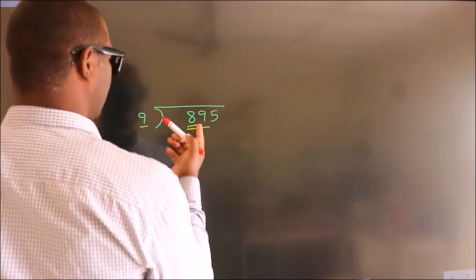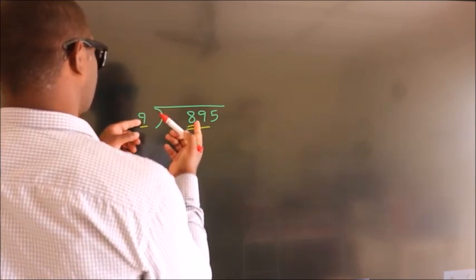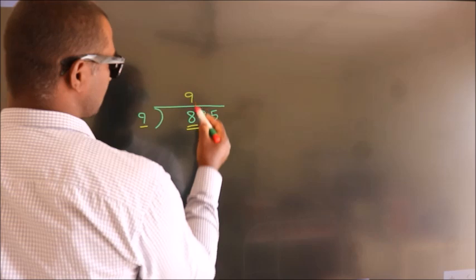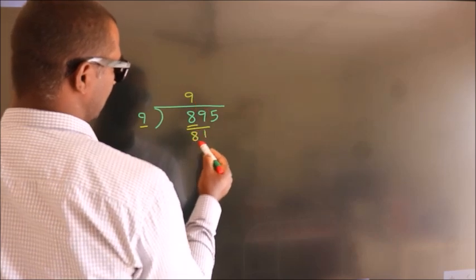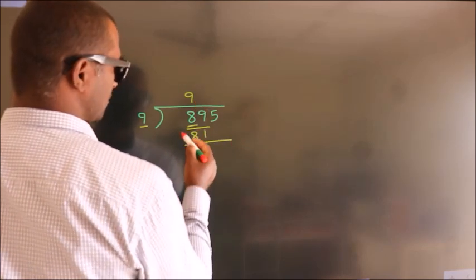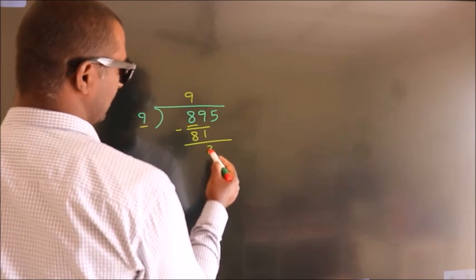A number close to 89 in 9 table is 9 9's 81. Now we should subtract, we get 8.